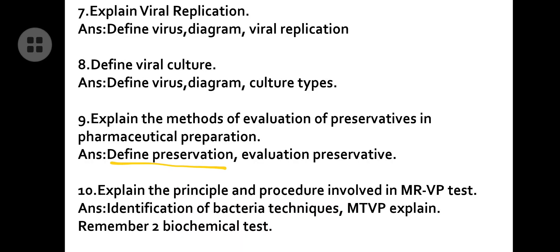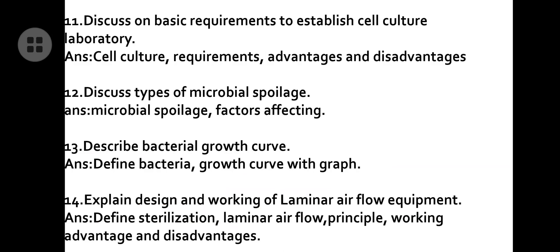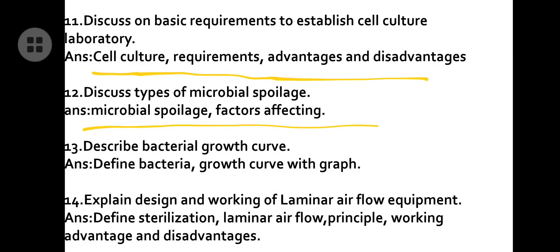Next: explain the principle and procedure involved in MRVP identification of bacteria technique. Define the bacteria identification technique, then explain MRVP and remember two biochemical tests: MRVP or citric acid test and indole test. Then discuss basic requirements to establish cell culture — define, write requirements, advantages, and disadvantages. Also discuss types of microbial spoilage and factors affecting it. For bacterial cell growth curve, define bacteria, draw the growth curve with graph.